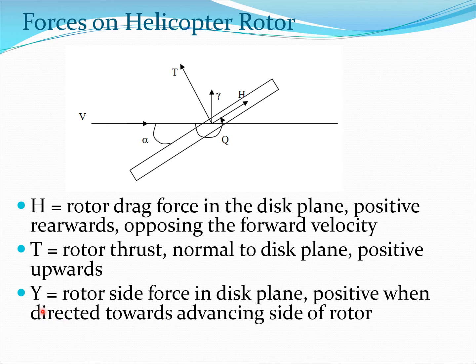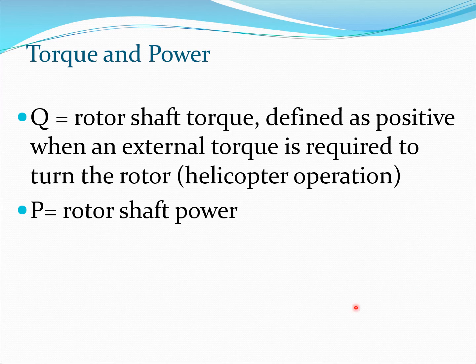The next such force is Y, which is the rotor side force in the disc plane, which is given here. This is again positive toward the direction of the advancing side of the rotor. You remember from our previous diagram where that is—that is at ψ = 90°. Now beside that, you also get Q, which is the rotor shaft torque, and this is defined as positive when an external torque is required to turn the rotor. This is the way a typical helicopter functions: you essentially need to provide it an external torque to turn the rotor.